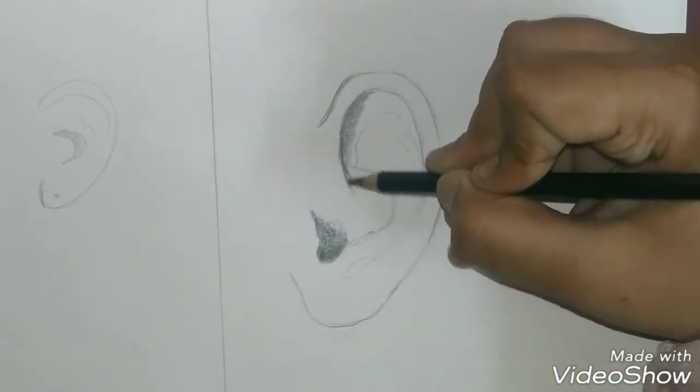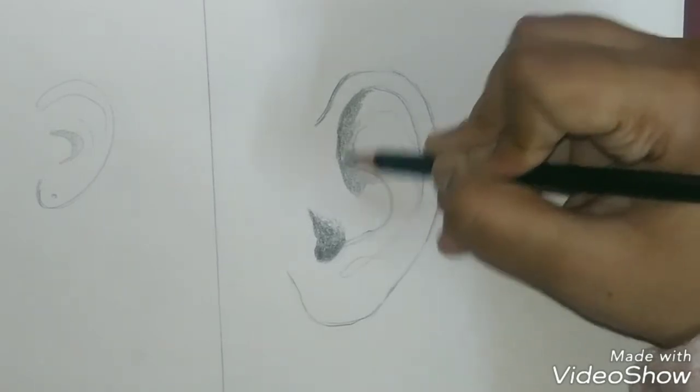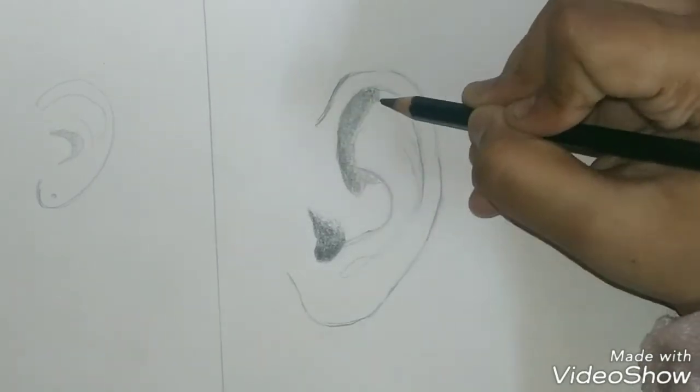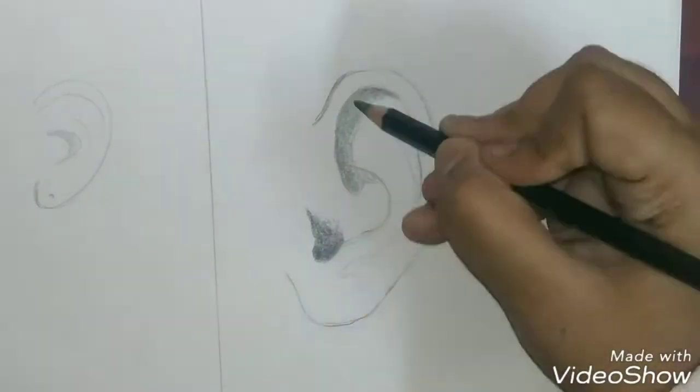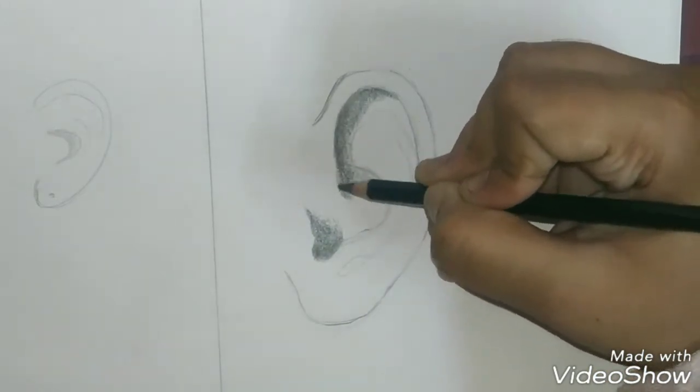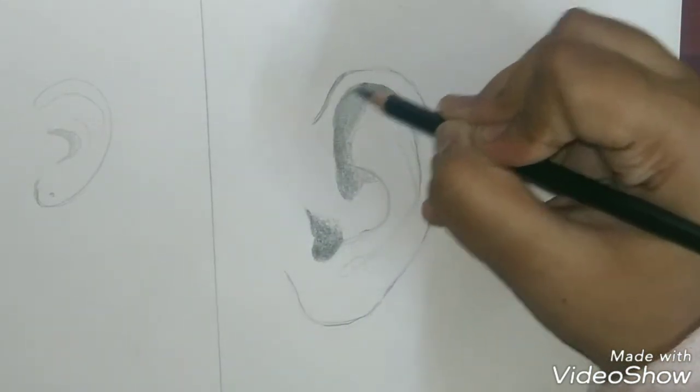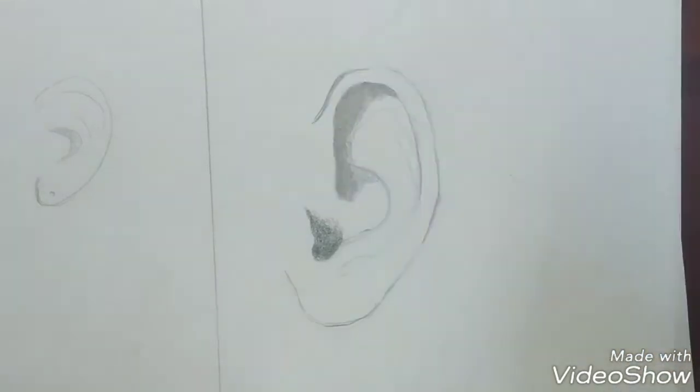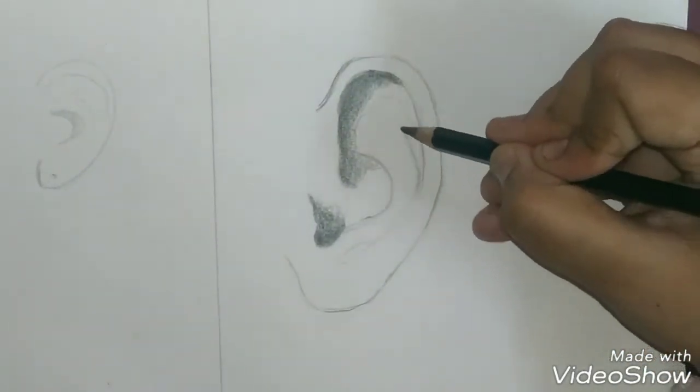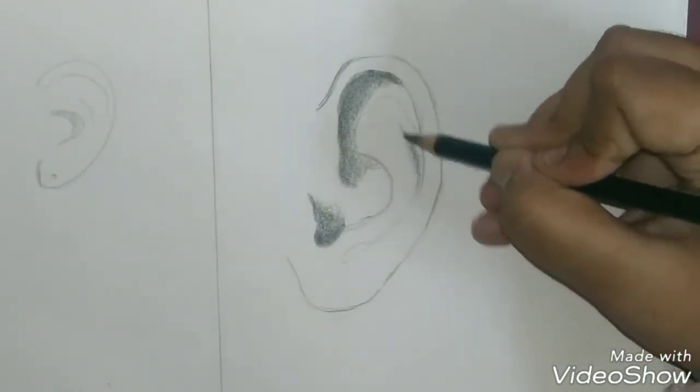Decide where your light source is. In my case, my light source is from the left side, so I'm going to take my darkest pencil. You can take an 8B or a 6B and shade the deeper parts of the ear darker, like this part and the part I just shaded.